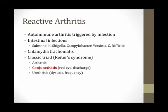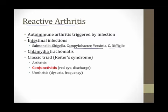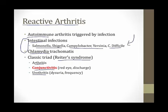Reactive arthritis is another condition that can lead to conjunctivitis. It's an autoimmune disorder triggered by infection — classically a GI infection such as Salmonella, Shigella, Campylobacter, Yersinia, or C. diff, and also Chlamydia. Days or weeks after one of these infections the patient develops arthritis — reactive arthritis. The classic triad, formerly called Reiter's Syndrome, involves arthritis, conjunctivitis, and urethritis: arthritis, a red eye, and pain with urination following one of these infections.